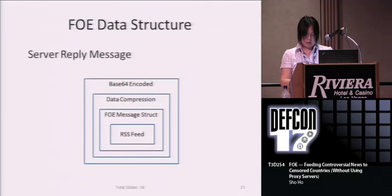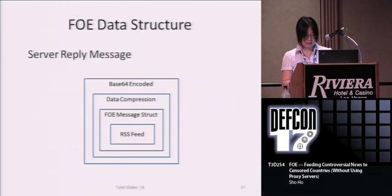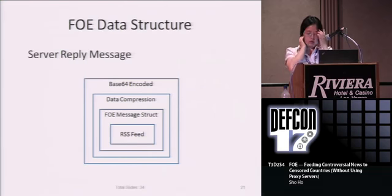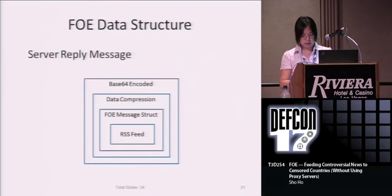FOA wraps the RSS feed with its own data structure — or more precisely, adds some header information. Then FOA will compress the entire message to reduce the size, and at the same time avoids content filtering. Finally, FOA will encode the compressed message using base64 encoding. This may not be strictly necessary, but we do it anyway to avoid problems.